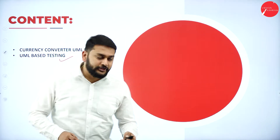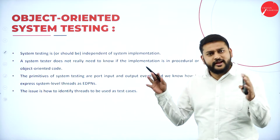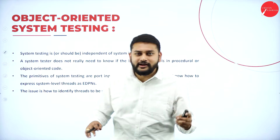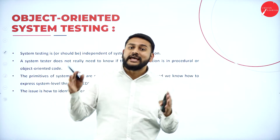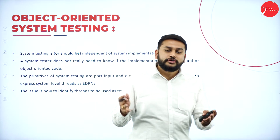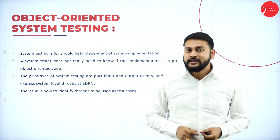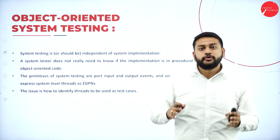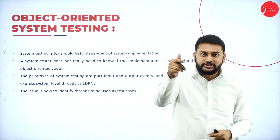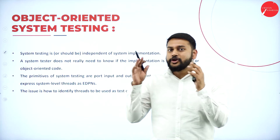When it comes to system testing, it is not required to know what exactly and how exactly the implementation is happening. System testing is an independent unit — that's the most important thing to remember. That is the reason you don't have to know or understand whether it is a procedural-oriented or object-oriented implementation. You don't have to worry about that since you are at the system level testing.